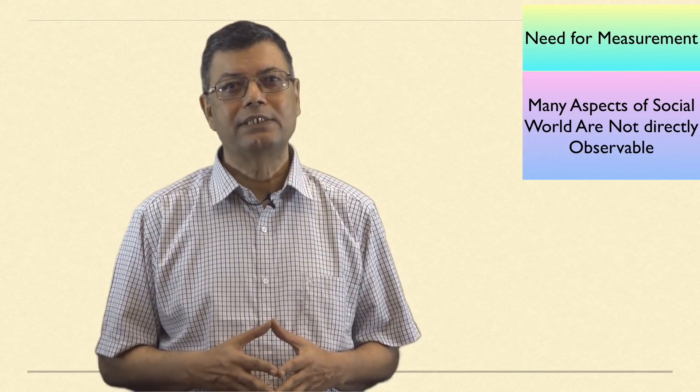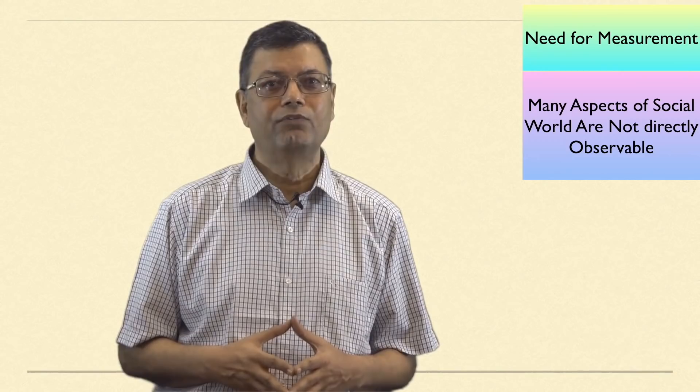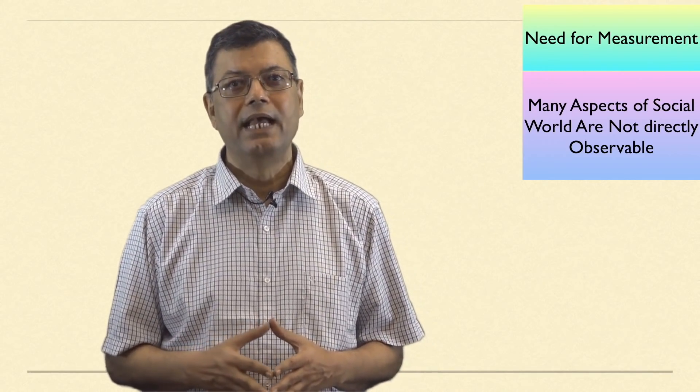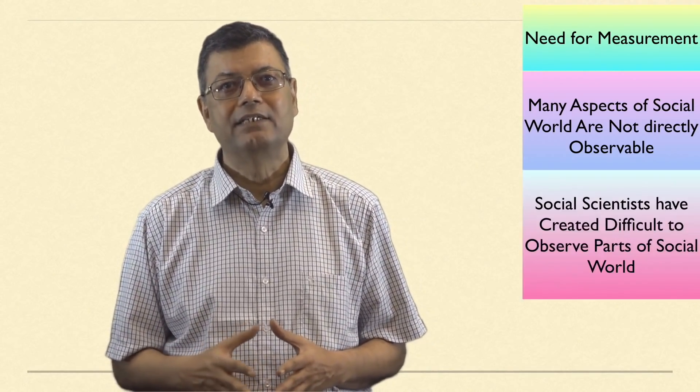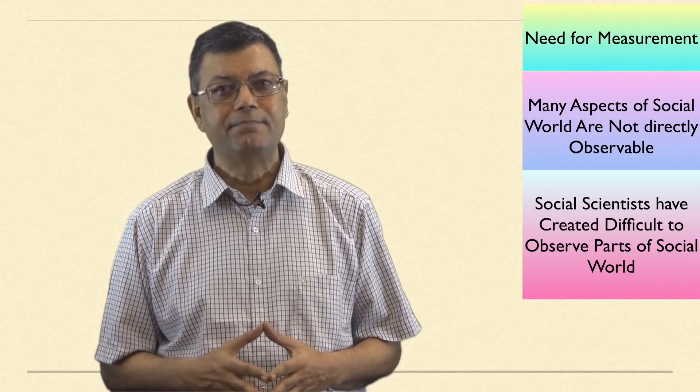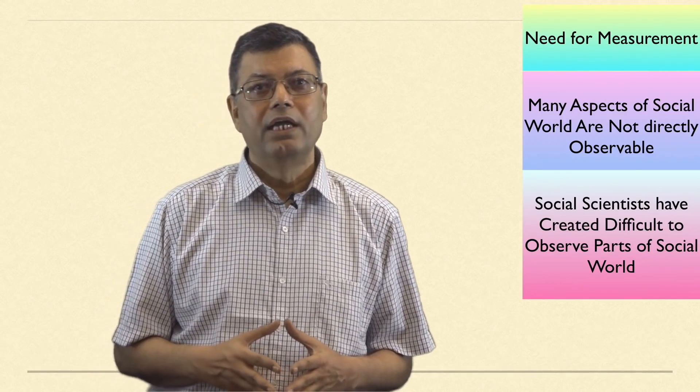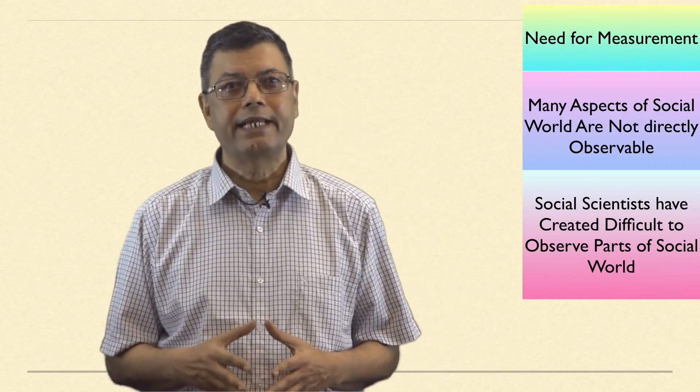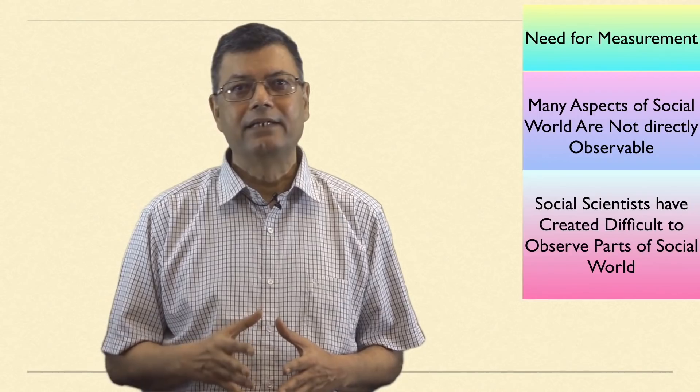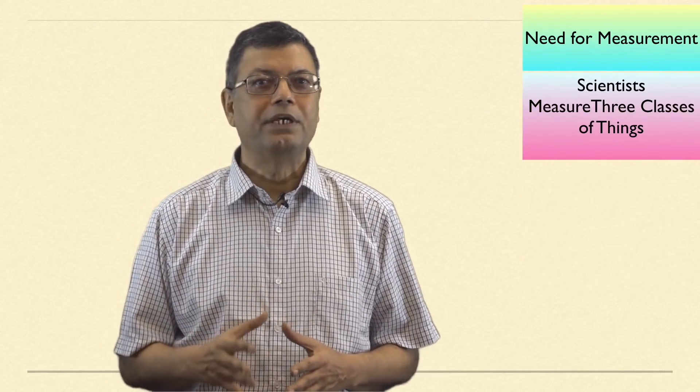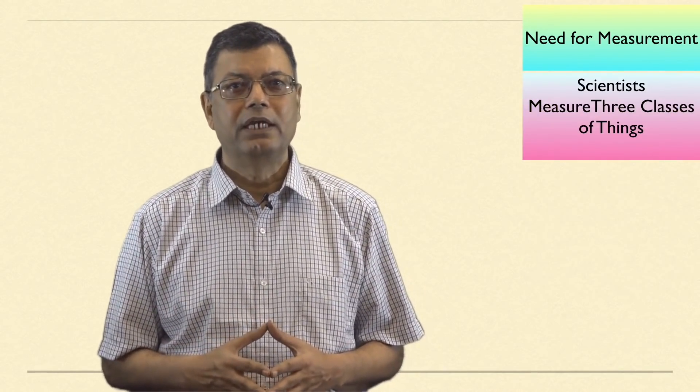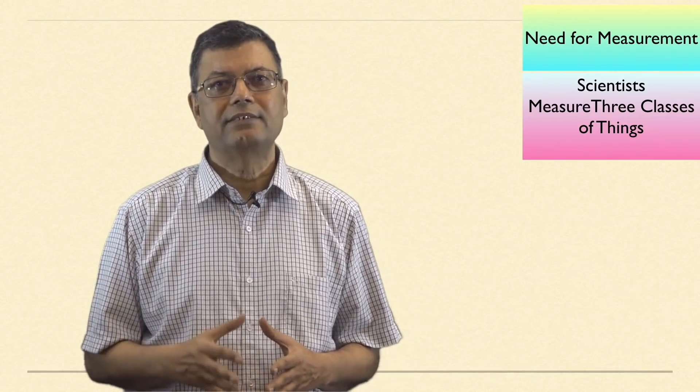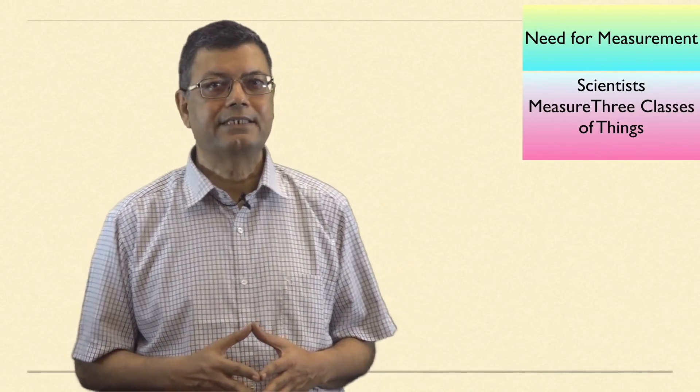Just as natural scientists created indirect measures of invisible molecules and the force of gravity, social scientists created measures for difficult to observe parts of the social world. In this context, Abraham Kaplan's work needs to be drawn upon. He distinguishes three classes of things that scientists measure.